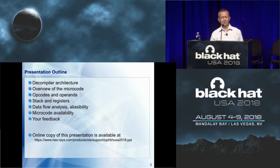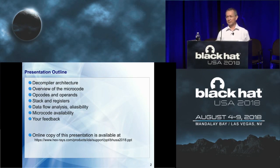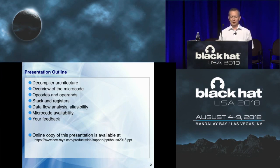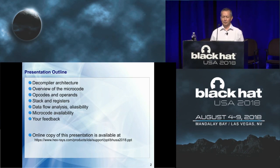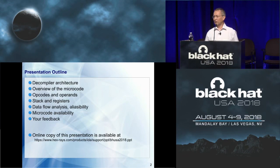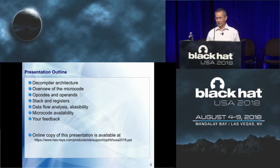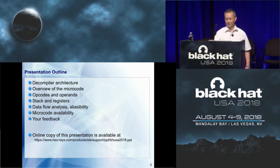This is the presentation outline. We will discuss the Decompiler architecture, then check how the microcode is built. Then we will talk about the opcodes and operands — the most interesting part. Then, once we have these building blocks, we will cover stack and registers, other operand types, and finally what we can do with the microcode. It enables data flow analysis, making many new analysis types possible. Then I'll cover microcode availability and we'll have time for Q&A if we can.